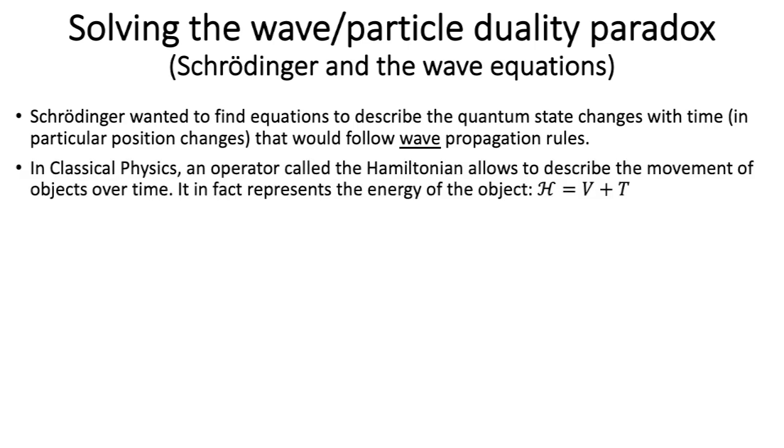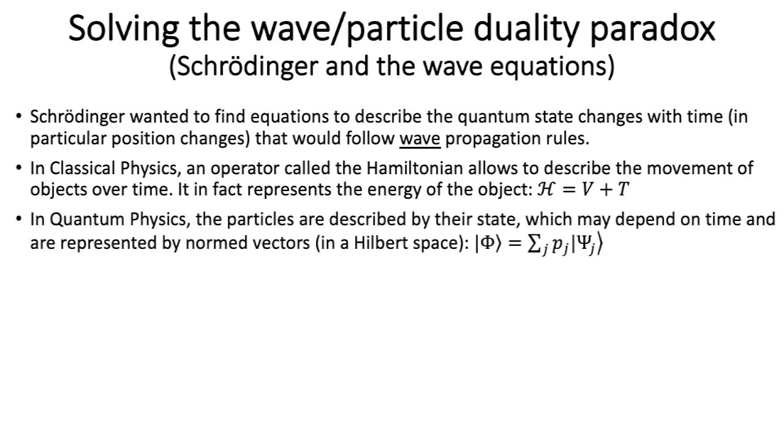Now, he also knew that in classical physics, an operator called Hamiltonian allows to describe the movement of objects over time. In fact, as you probably know, it represents the energy of the object, the kinetic energy plus potential energy. On the other hand, we've seen that in quantum physics, the particles are described by their state, which may depend on time and are represented by ket vectors, like this.